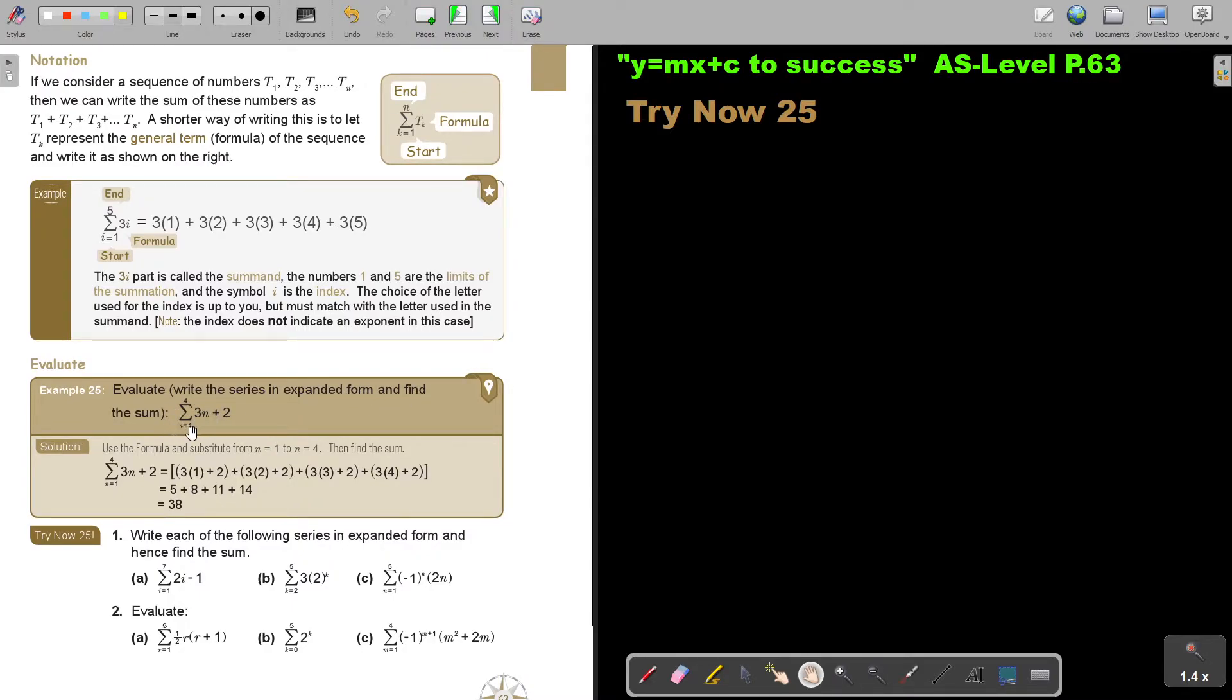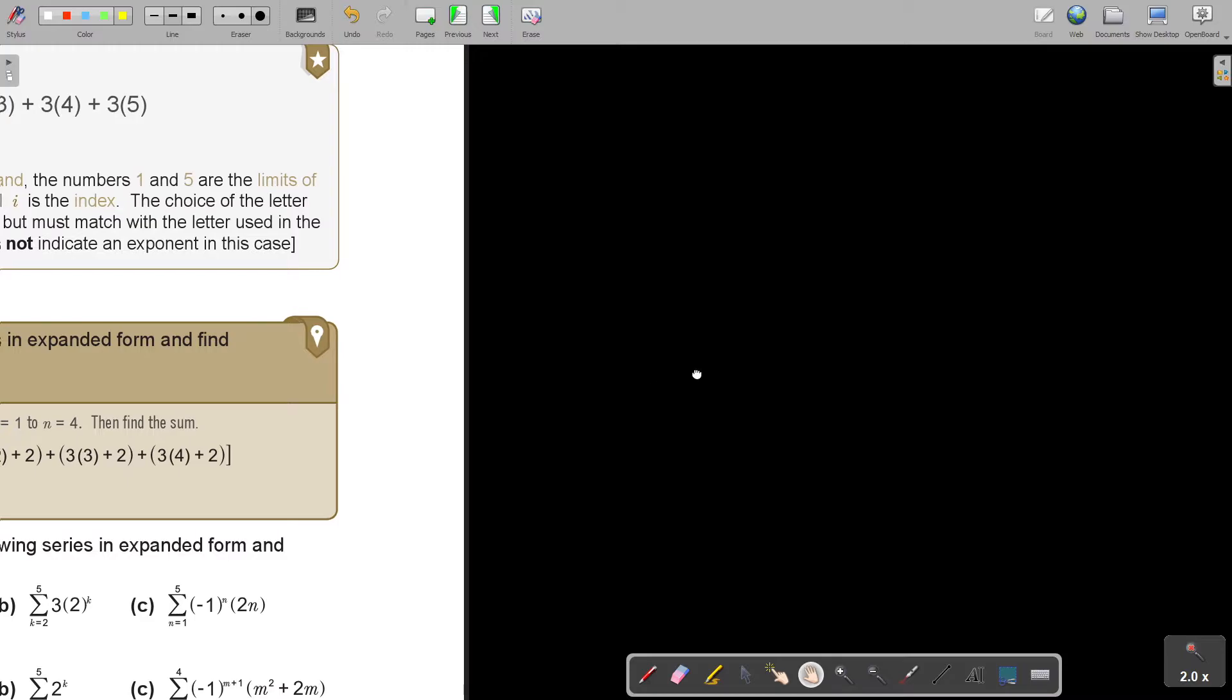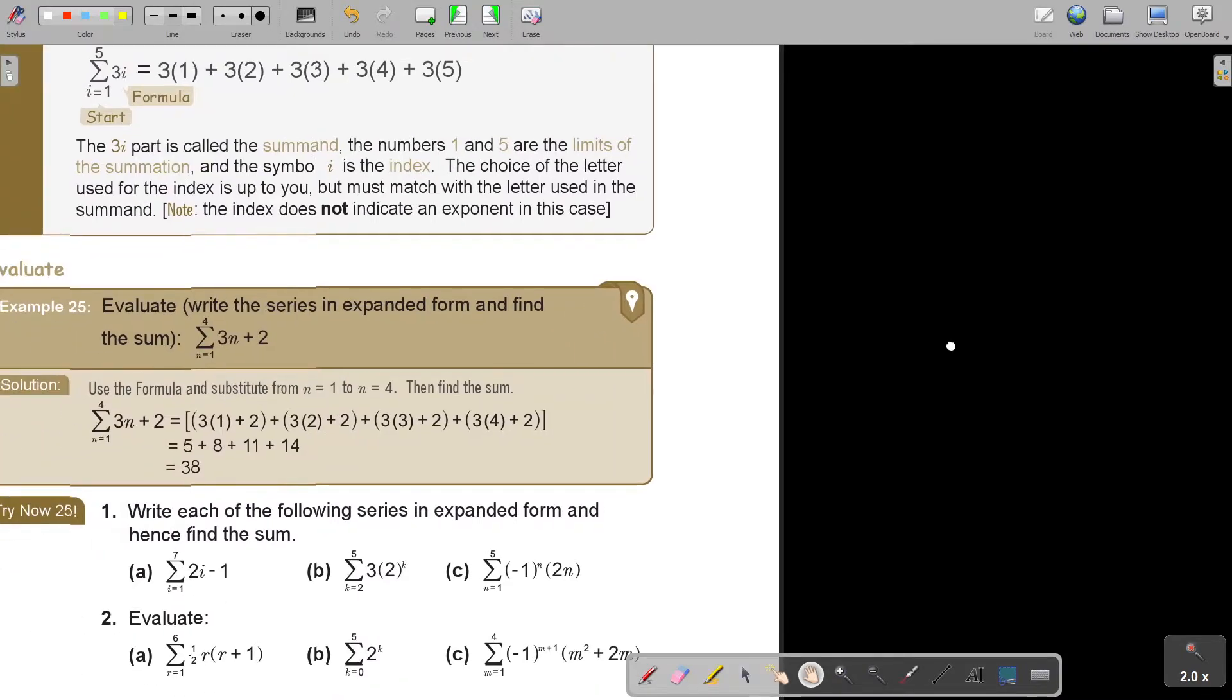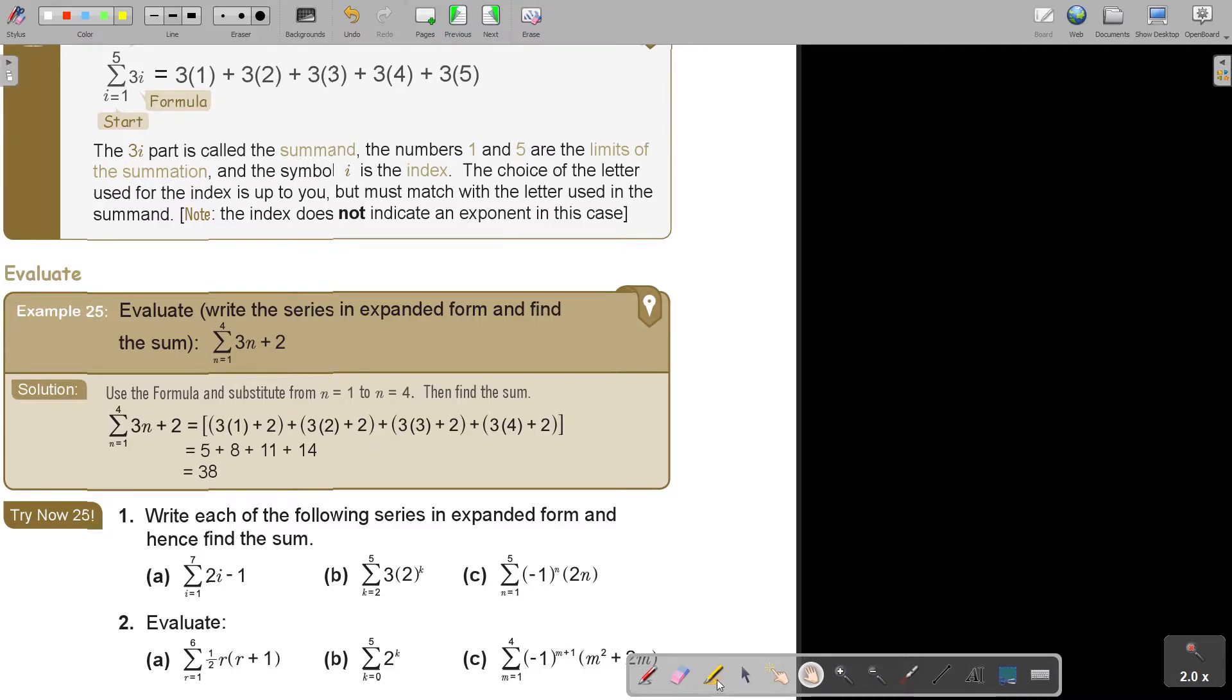N must start at 1, and it must end at 4. Basically, write each of the following in expanded form and hence find the sum. So expand, you can just substitute, but in this case I want you to write that and find the answer. So let's start easy. Number 1A, then B, and then 2B. Stop the video, and you can continue as soon as you are finished.